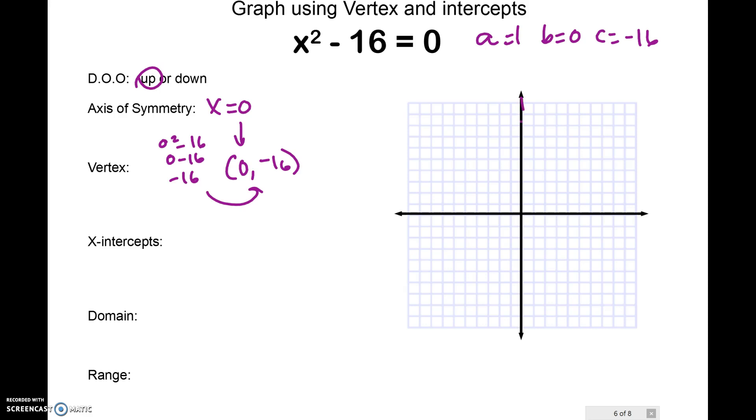So let's graph our axis of symmetry, graph our vertex. We'll go by 2s: 2, 4, 6, 8, 10, 12, 14, 16. We know it goes up, so we know it's going to have x-intercepts.